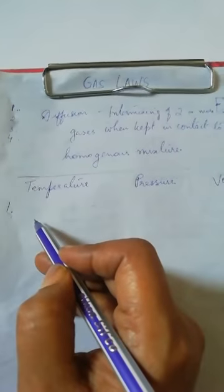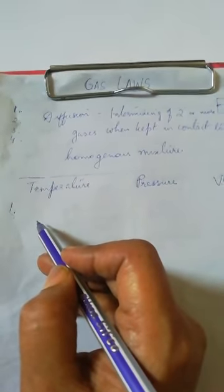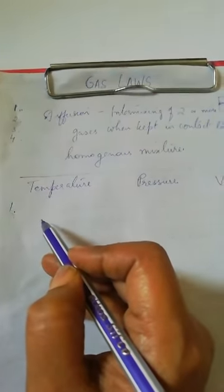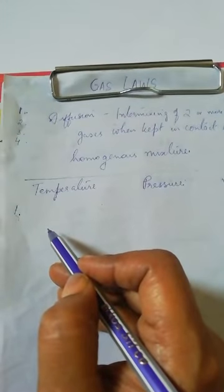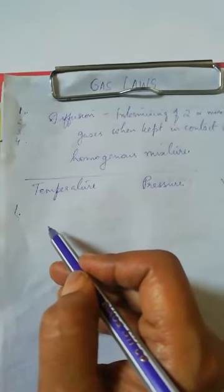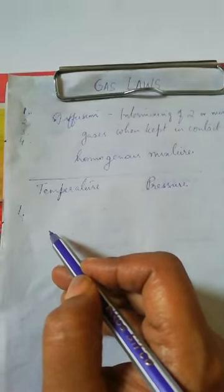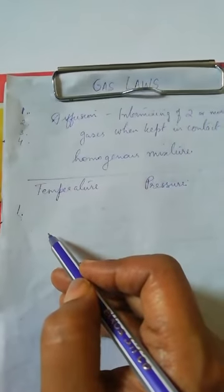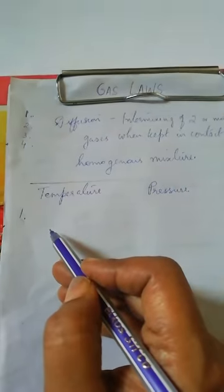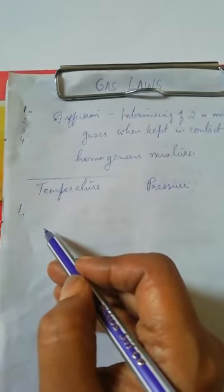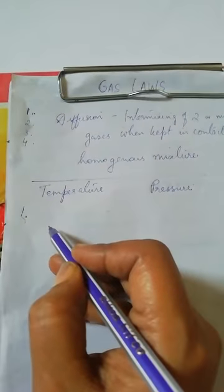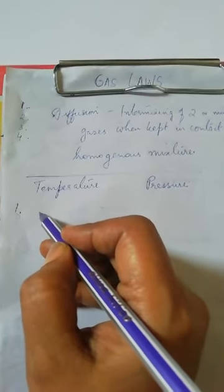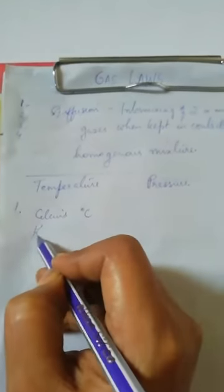When you raise the temperature of a gas or any other substance, all the molecules gain kinetic energy and start moving at a random speed higher than the previous speed, and we say that the temperature is increased. In other words, the average kinetic energy of a particle is directly proportional to its temperature. Temperature is measured either in degree Celsius or Kelvin.